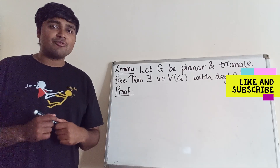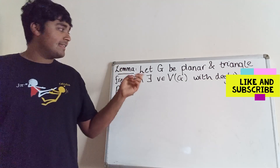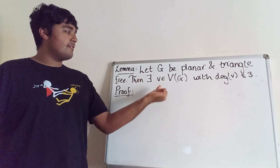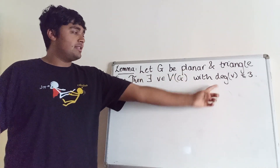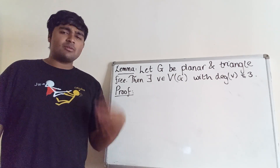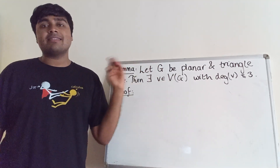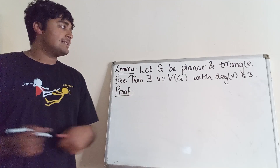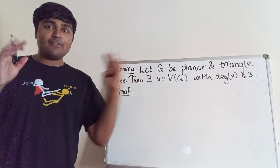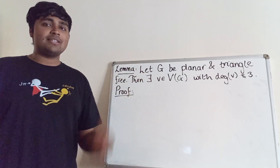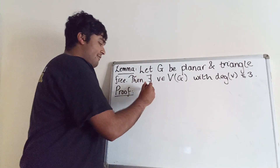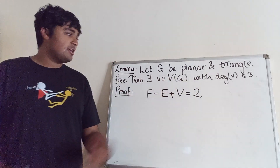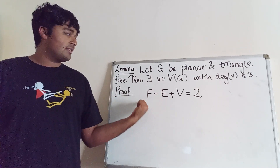The first step is to state and prove a lemma: let G be a planar and triangle-free graph. Then there exists a vertex V in the vertex set of G with degree of V less than or equal to three. In other words, given a planar triangle-free graph, there is always at least one vertex with degree at most three. To prove this, we take a planar graph G and use Euler's formula, which applies to all planar graphs: F minus E plus V equals two. F is the number of faces, E is edges, and V is vertices.